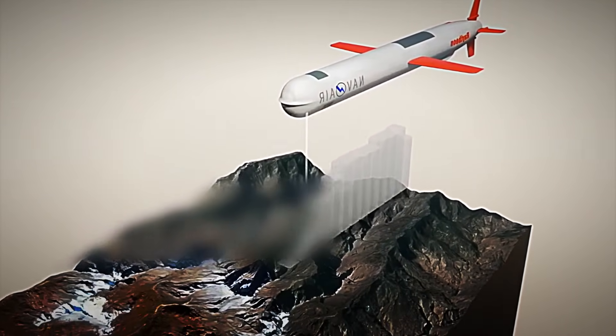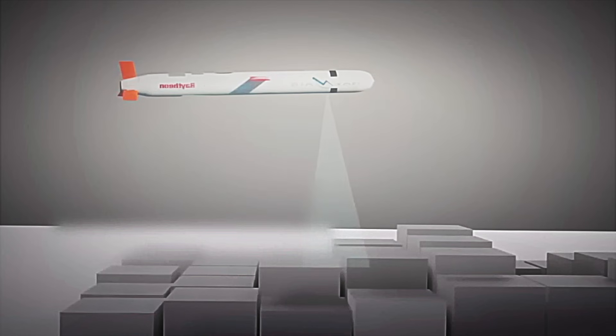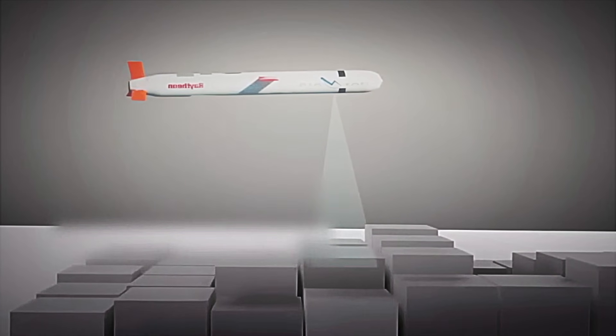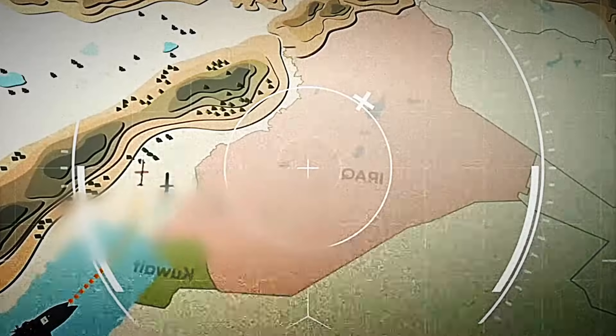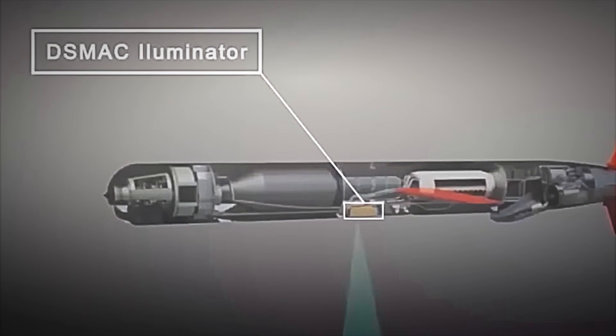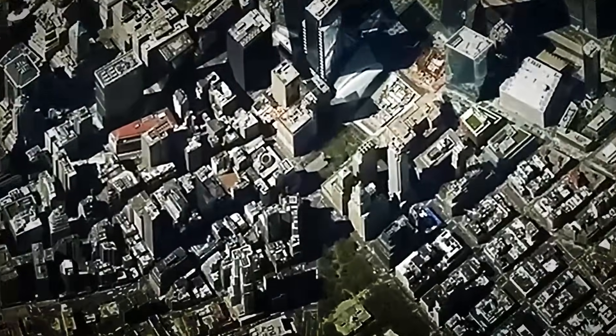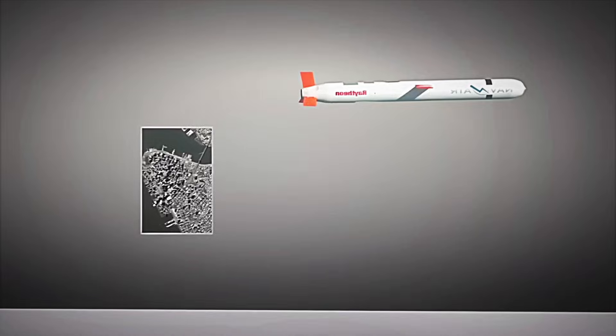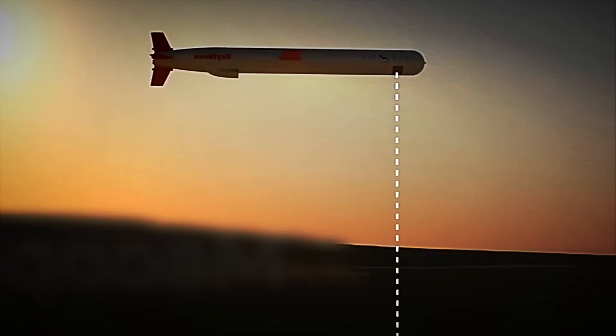If the terrain is too flat to use the relief as a reference, the Tomahawk changes tactics and activates the DSMAC system. A camera captures real-time images of the surroundings and compares them to pre-programmed photographs in its memory. By detecting elements such as roads, rivers, or buildings, it can confirm its position even in areas where any human would see a repetitive landscape.